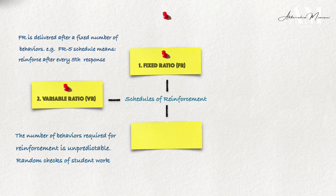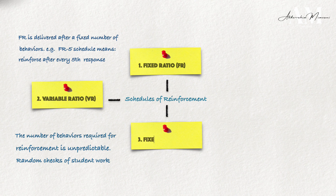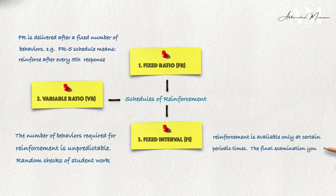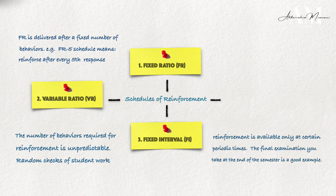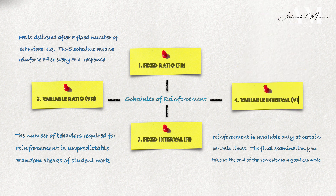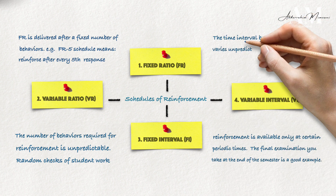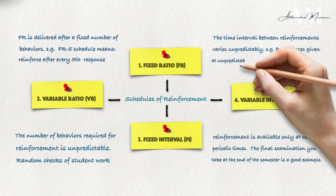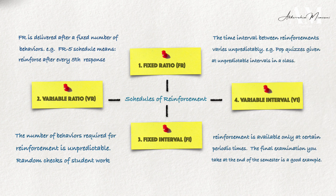Third, intermittent reinforcement can take the form of fixed interval, which means reinforcement is available only at certain periodic times — the final examination you take at the end of the semester is a good example. For variable interval, reinforcement is available at some times but not others, and the time interval between reinforcements varies unpredictably. A good example is pop quizzes given at unpredictable intervals in a class.